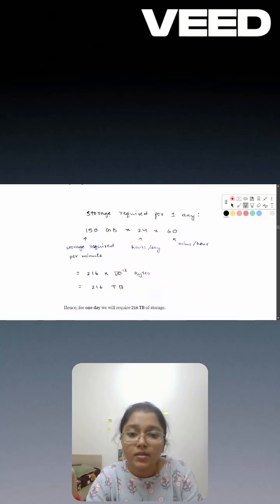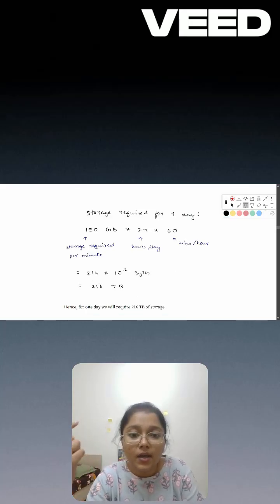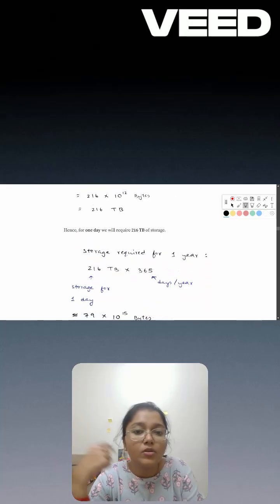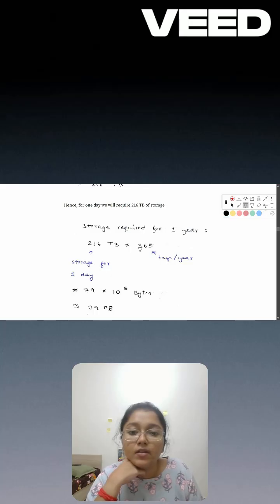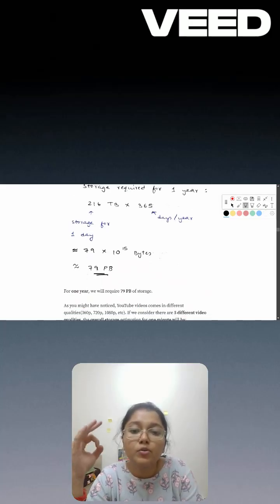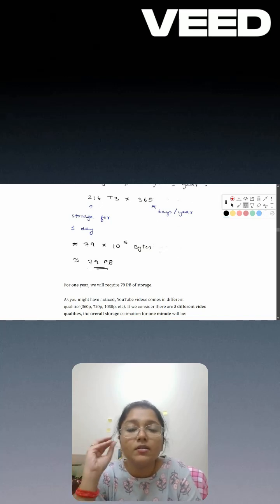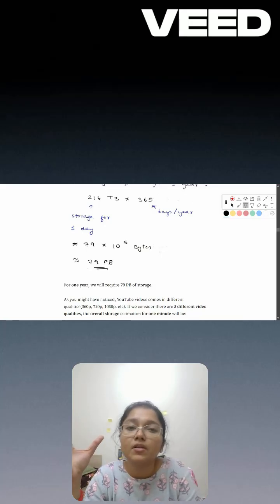We are getting 216 terabytes in one day. In a year, how much storage will be required? 365 days. So we will multiply and we are getting 79 petabytes. So 79 petabytes storage is required to store the entire content. This is the storage estimation.